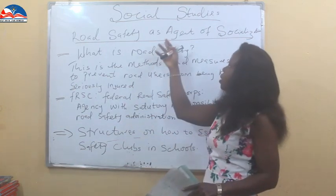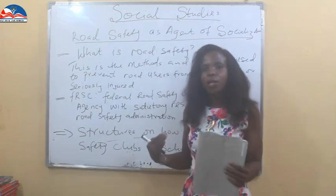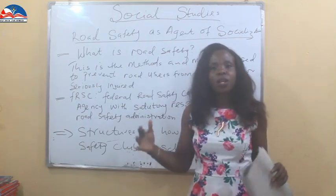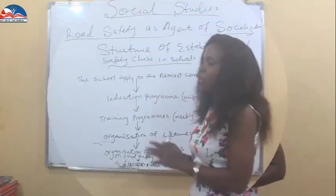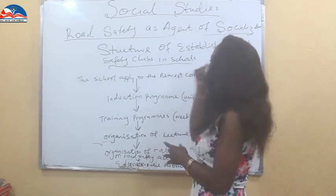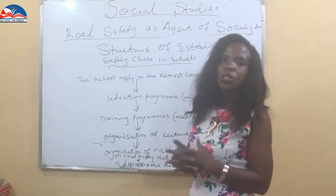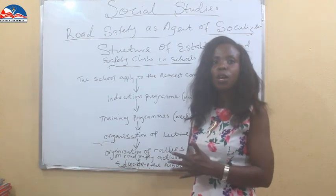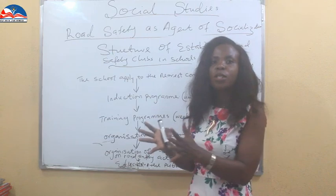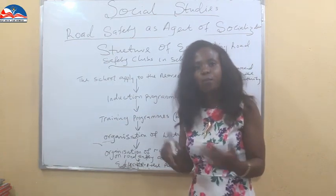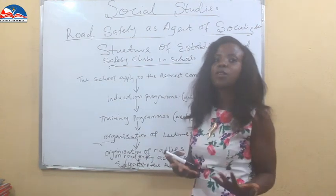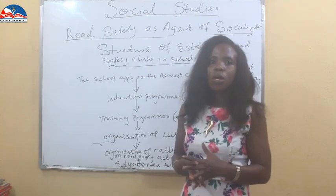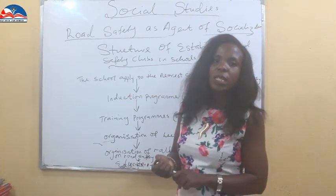Now we move to our next subtopic: structures on how to establish road safety clubs in schools. This is where the road safety agency interacts with students, individuals, and the general public. Road safety clubs in schools help students socialize with the road safety corps, and for them to have the impact of this road safety group, they need to form clubs in schools to create awareness.